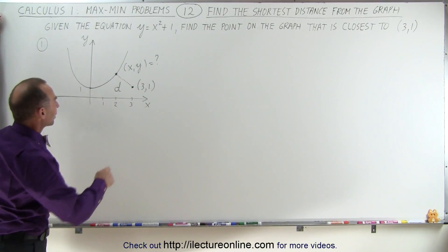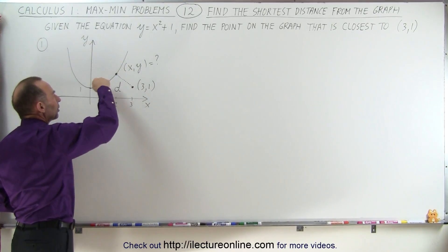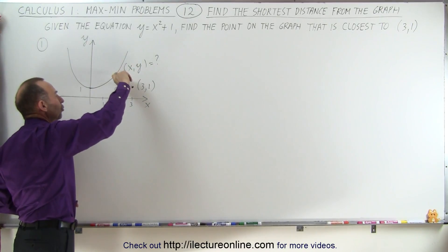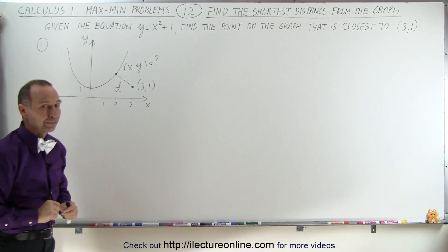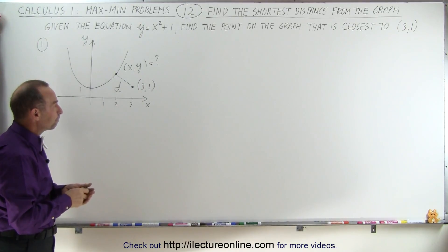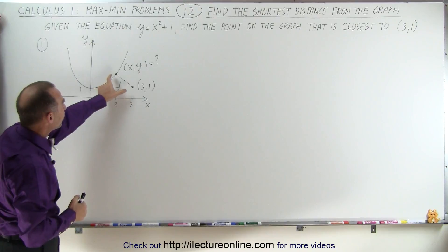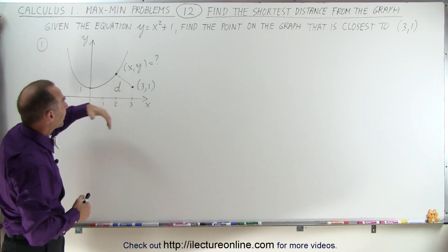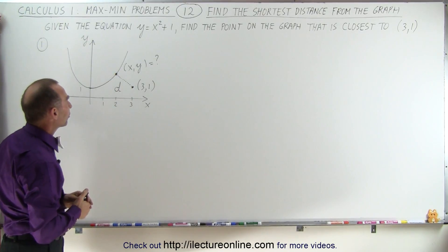We're given a point, (3, 1), and we're trying to find a point on the graph that is the closest to the given point. The strategy is that we'll come up with some equation for this distance and then try to minimize that distance.